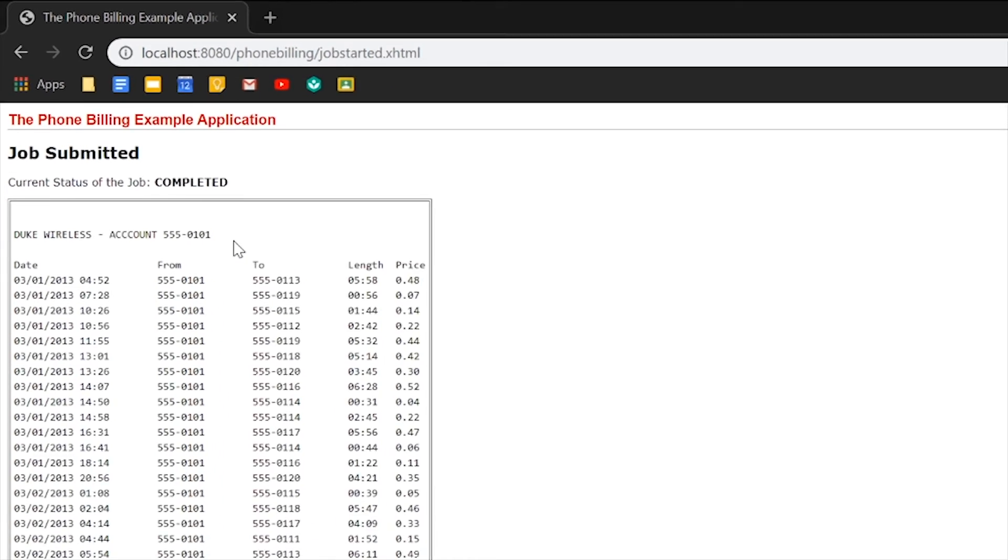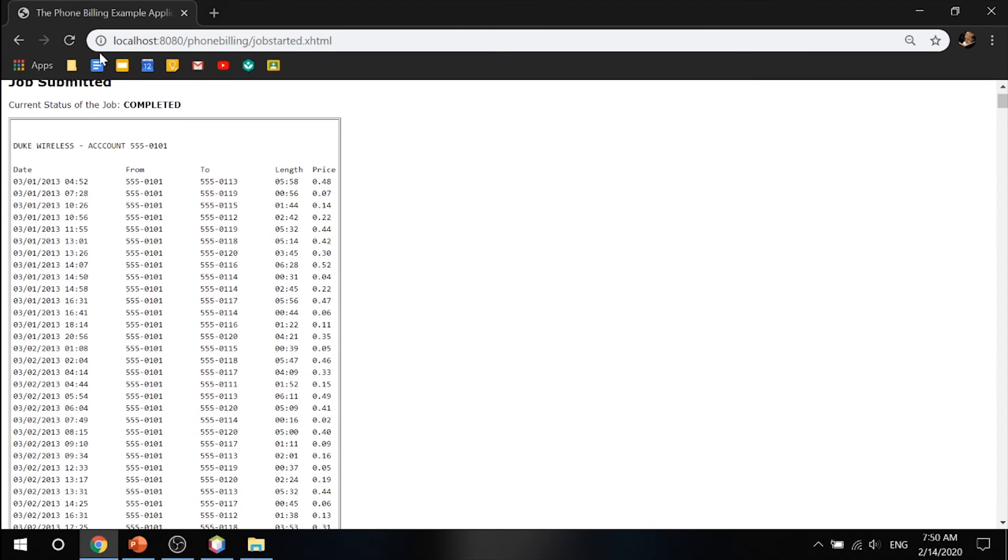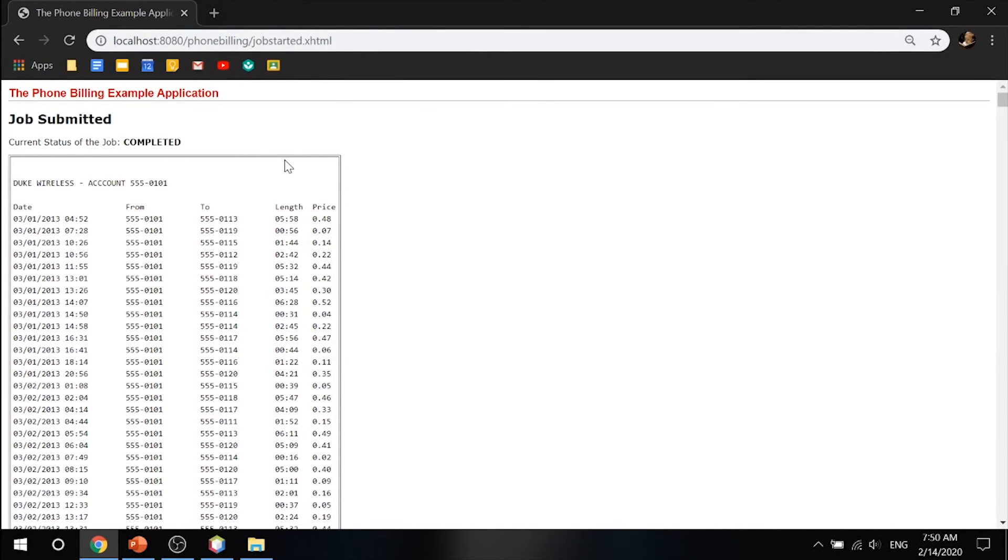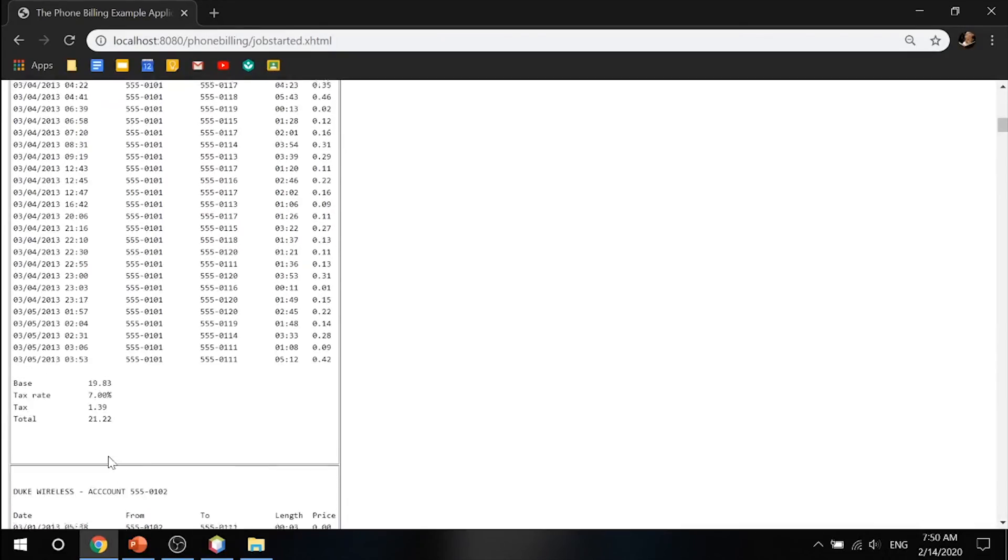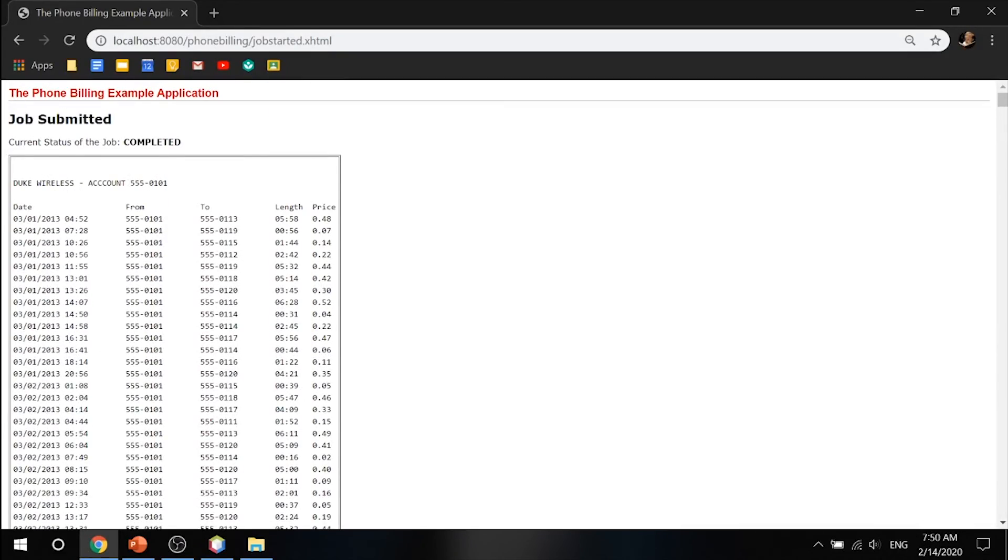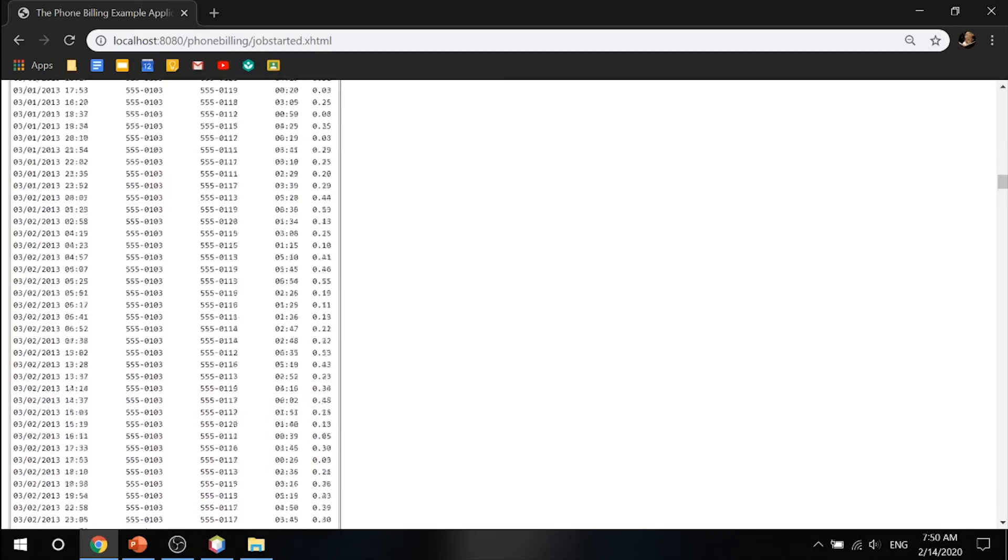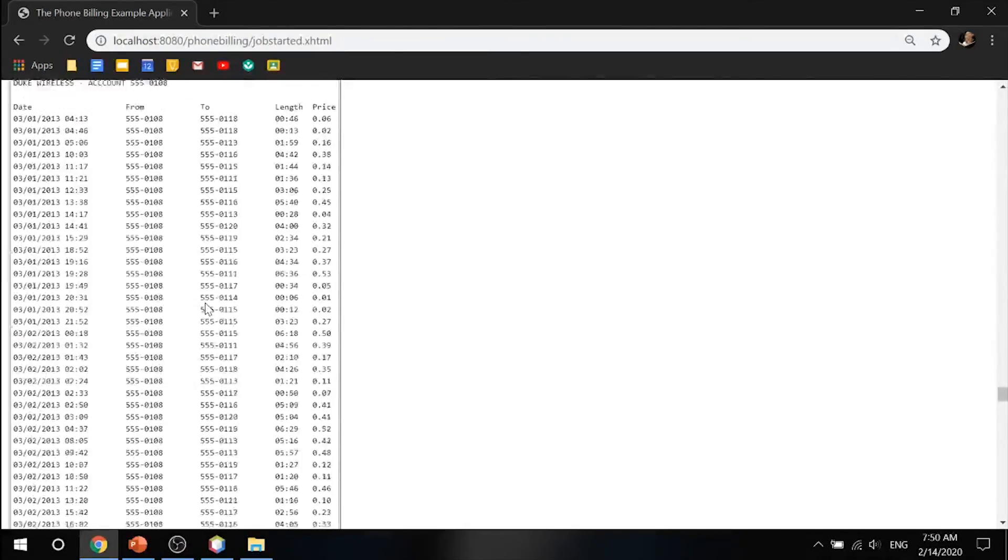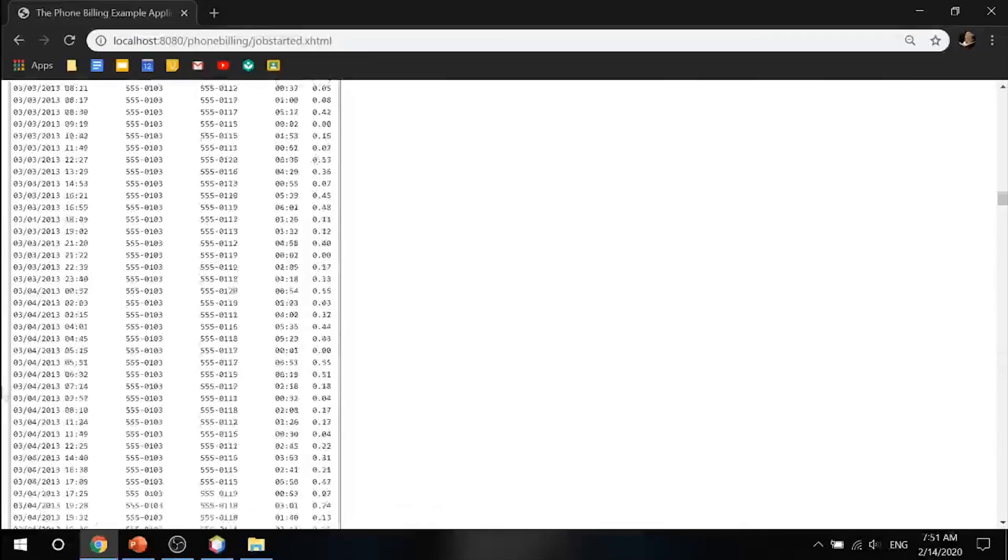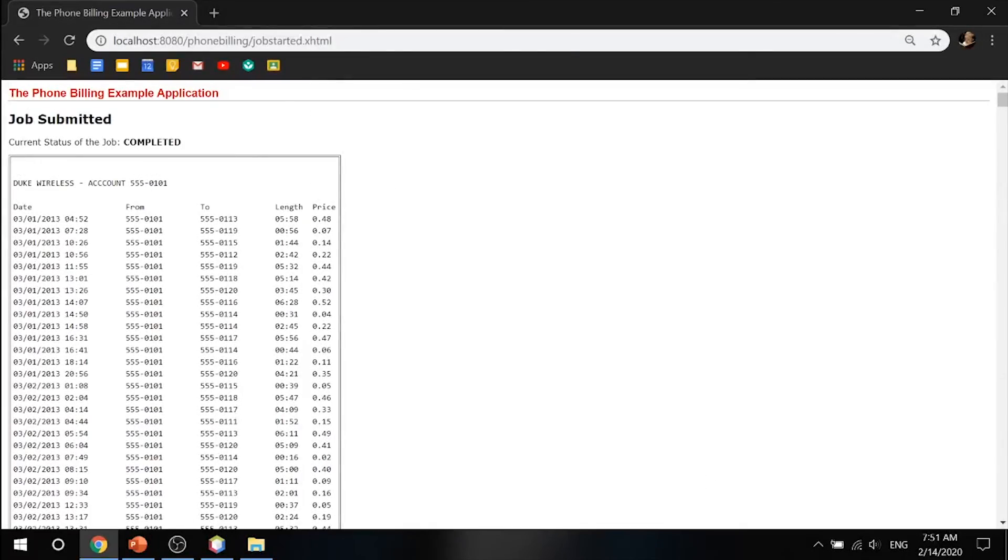And now what it did is it separated all that log stuff into data that humans can read, like for example the price, length, the to address, the from address, and the date and time. And that's it, that's literally it. These are from Duke Wireless accounts and so on. And that's the beauty of batch jobs. It can continue doing this periodically as many times as you want without you having to touch it. And that's all there is about batch jobs and batch processing.